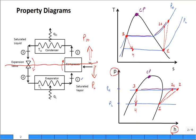Notice that both diagrams have state four in the two-phase region, and so the quality will be something like 20, 25, 30, 35 percent, somewhere in there depending on how high the pressure difference is between P-h and P-l. The greater the pressure difference, the higher the quality.